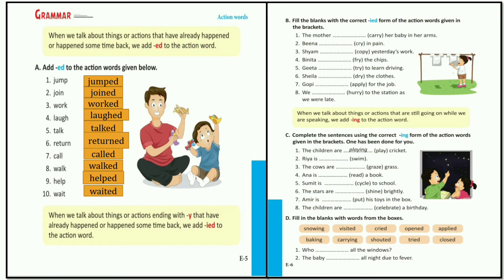Action words grammar. When we talk about things or actions that have already happened or happened some time back, we add ED to the action word. For example, add ED to the action words given below: jump - jumped, join, work - worked, laugh - laughed, talk - talked.